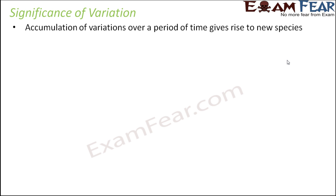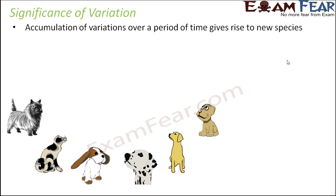Now the significance of variation: accumulation of variation over a period of time gives rise to new species. For example, suppose a dog has long hair and long ears. When this reproduces further, all the dogs produced will have long ears — that is how you get one particular variety of dog. Similarly, there will be some dogs with a spotted body. That again becomes a trend over a period of time, giving rise to a new variety.